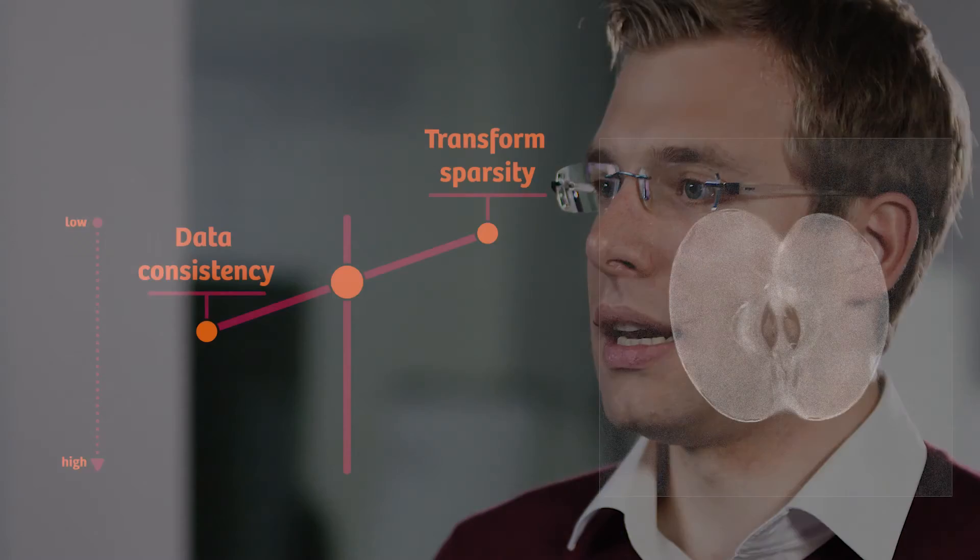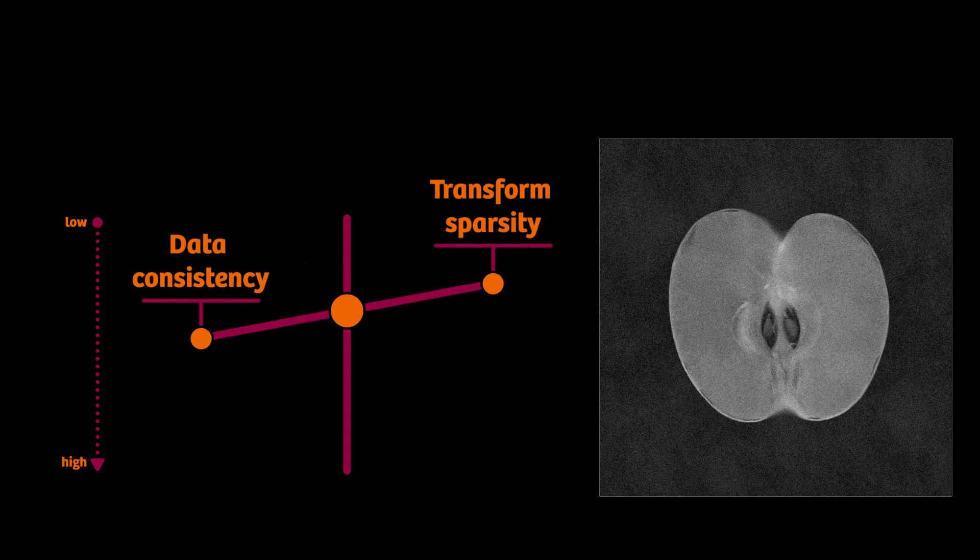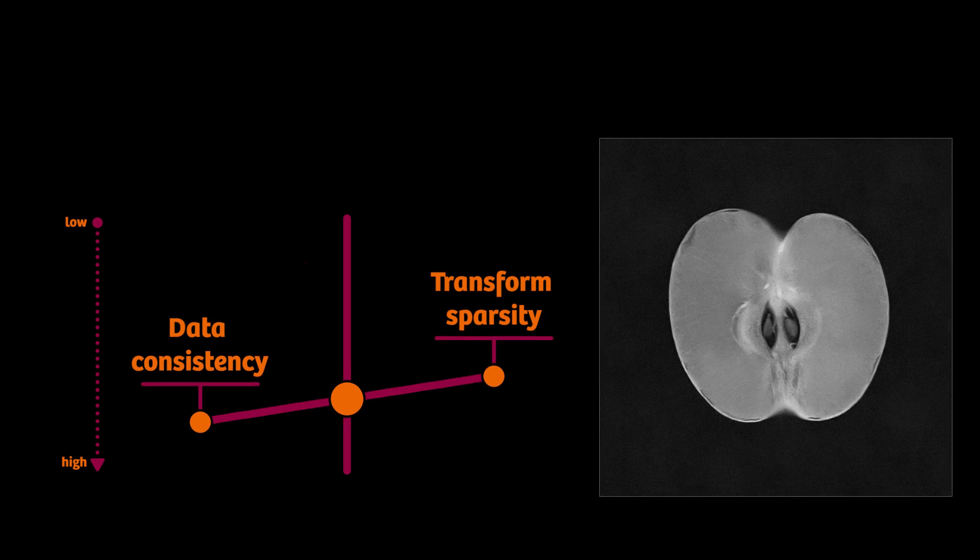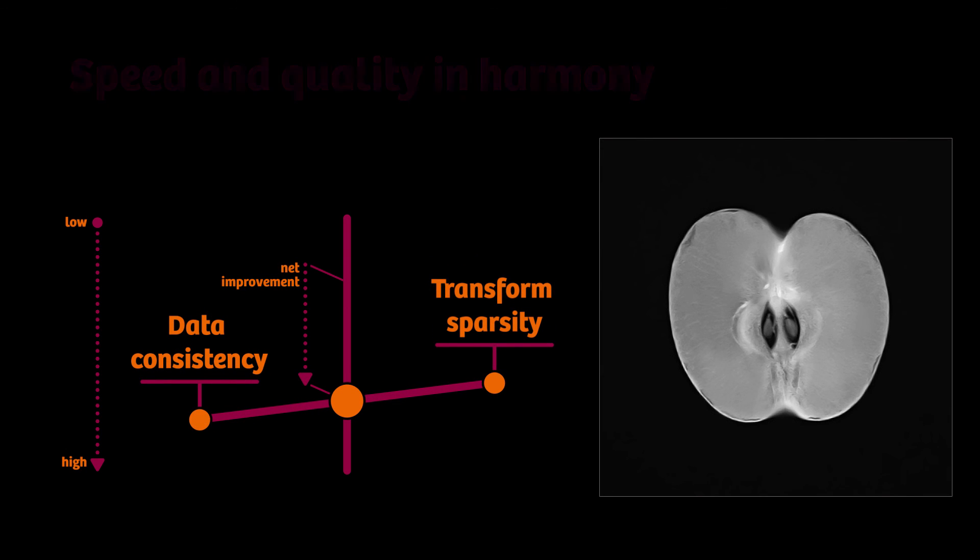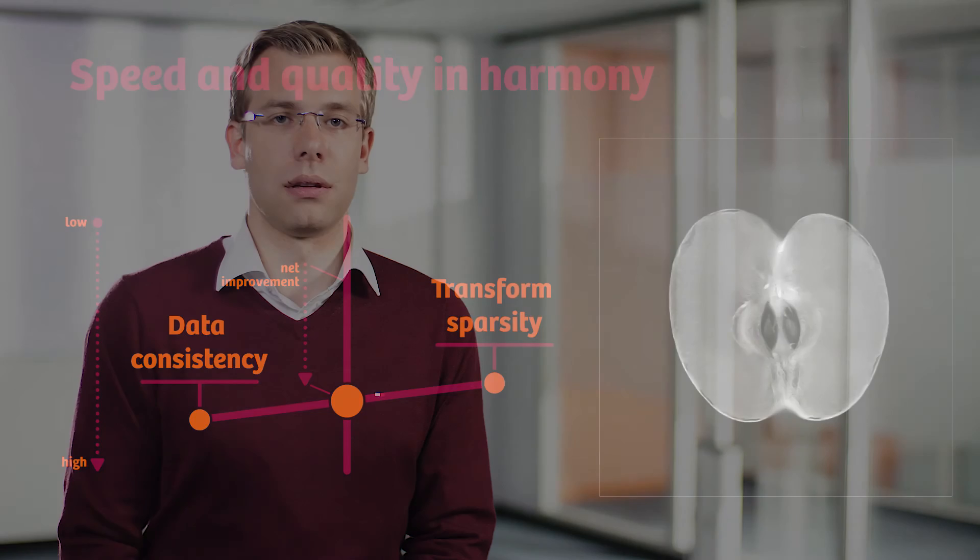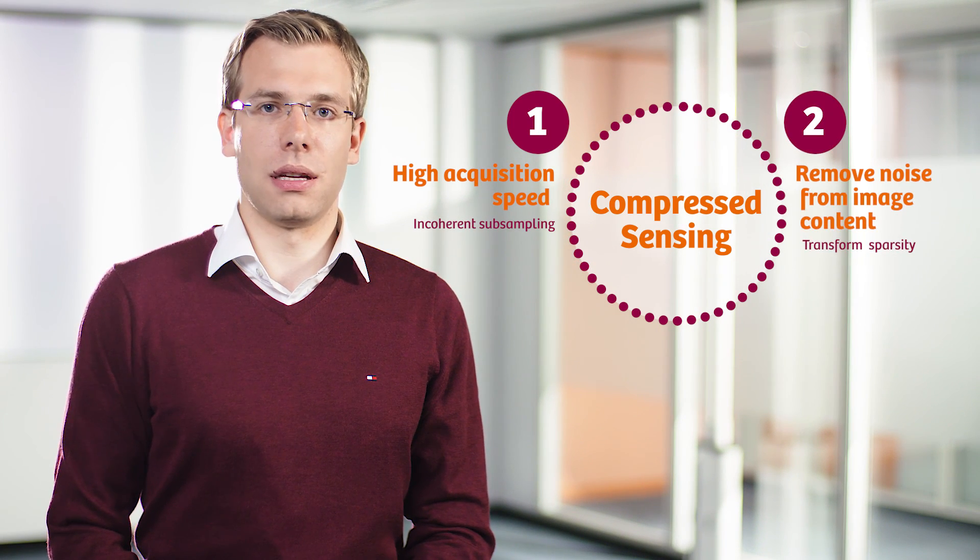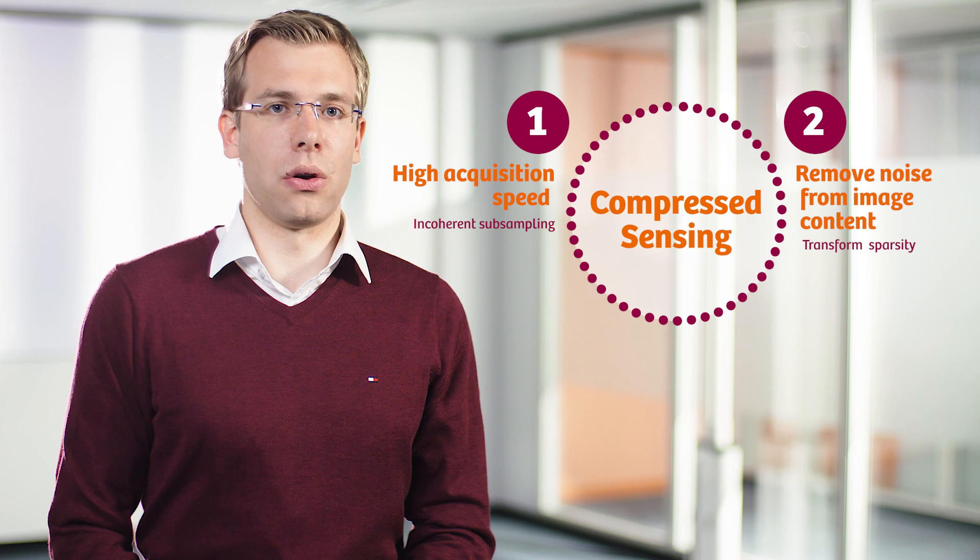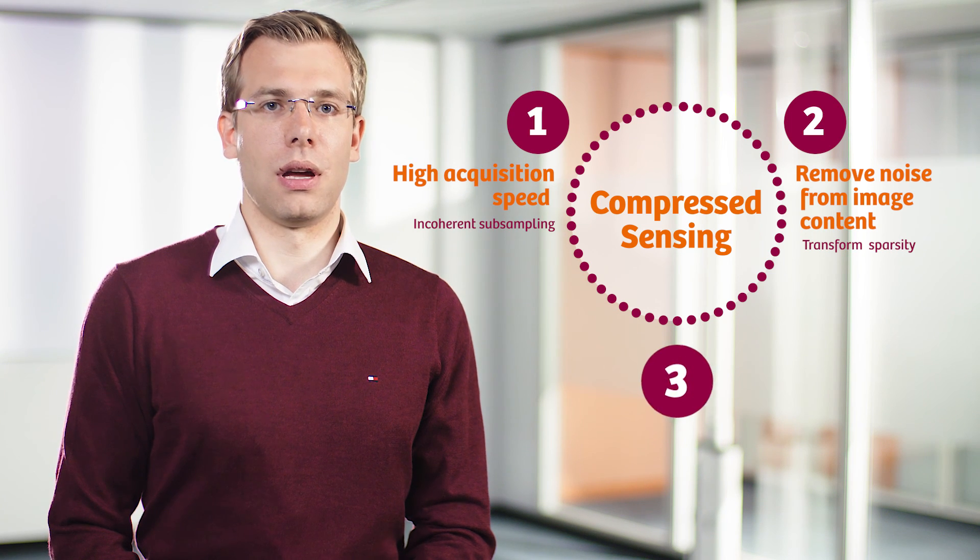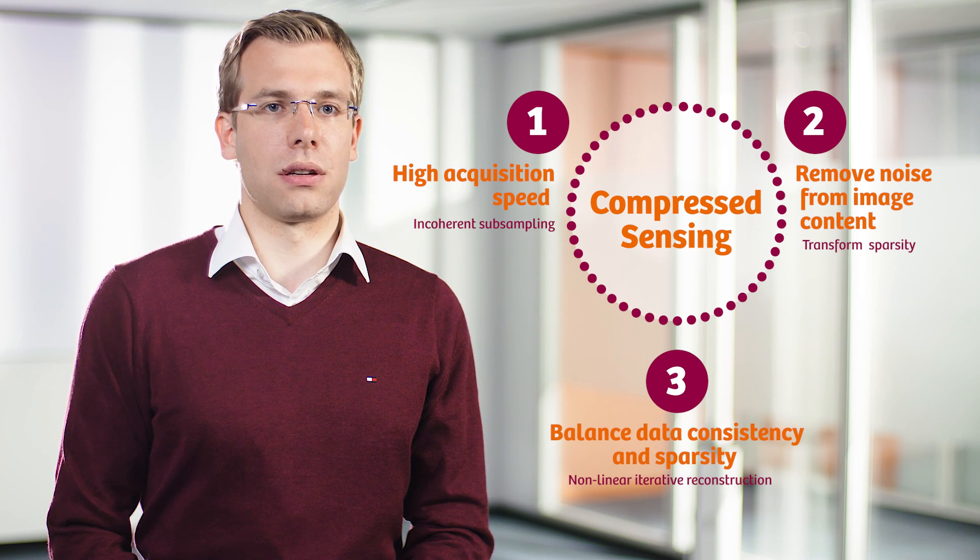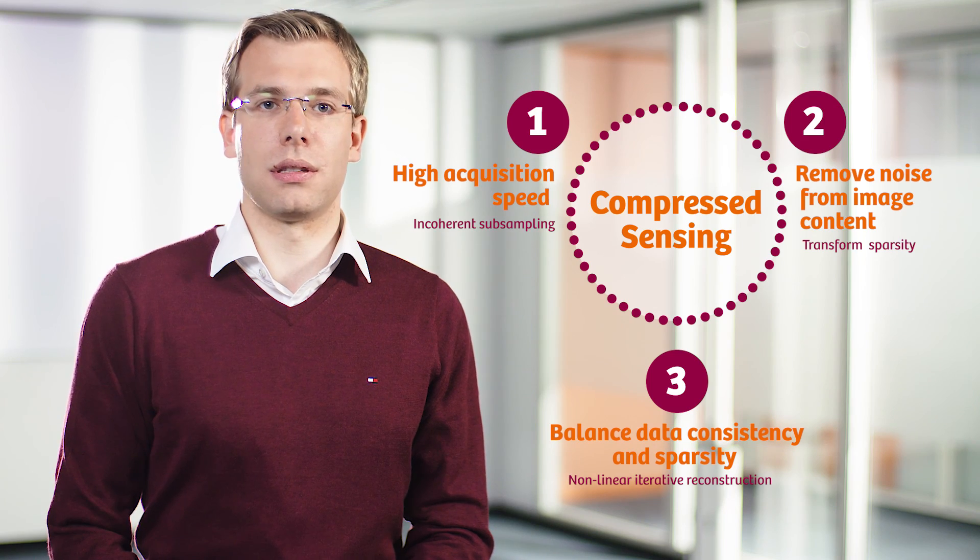The iterative process ensures a balance of both. And after a defined number of iterations, data consistency and sparsity have been increased and have come to an ideal balance. That means we've brought speed and quality in harmony, thanks to the three golden rules of compressed sensing: incoherent subsampling for high acquisition speed, transform sparsity to separate and remove the noise from the image content, and non-linear iterative reconstruction to balance data consistency and sparsity.